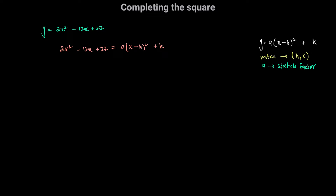Let's expand the right-hand side. We have a times (x squared minus 2hx plus h squared) plus k. Distributing a, we get ax squared minus 2ahx plus ah squared plus k.